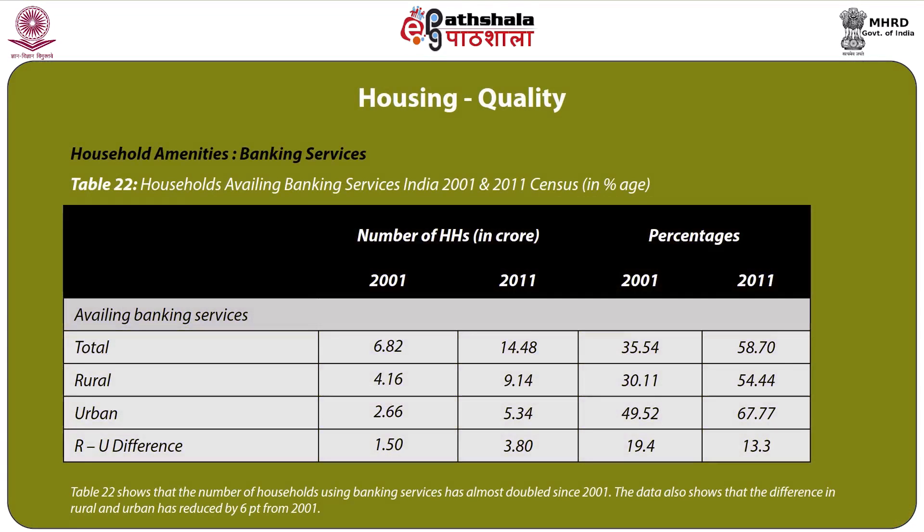Table 22 covers households availing banking services in 2001 and 2011. The overall percentage increased from 35.54 percent in 2001 to 58.70 percent in 2011, showing that the number of households using banking services has almost doubled since 2001. The data also shows that the rural-urban difference has reduced by 6 points from 2001.